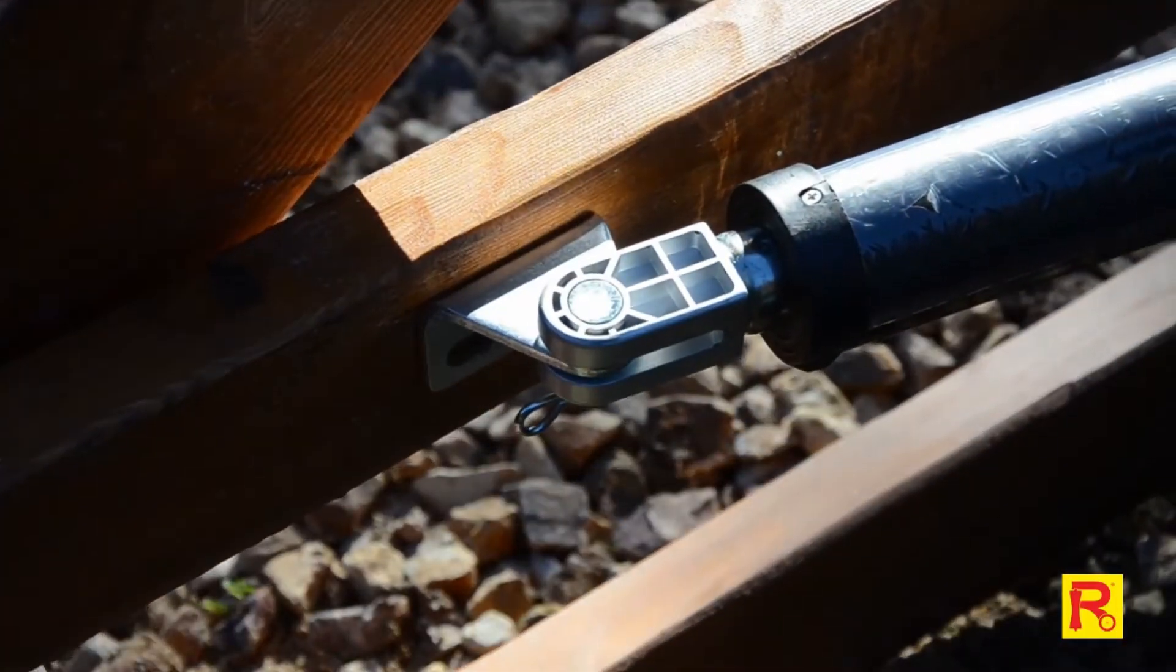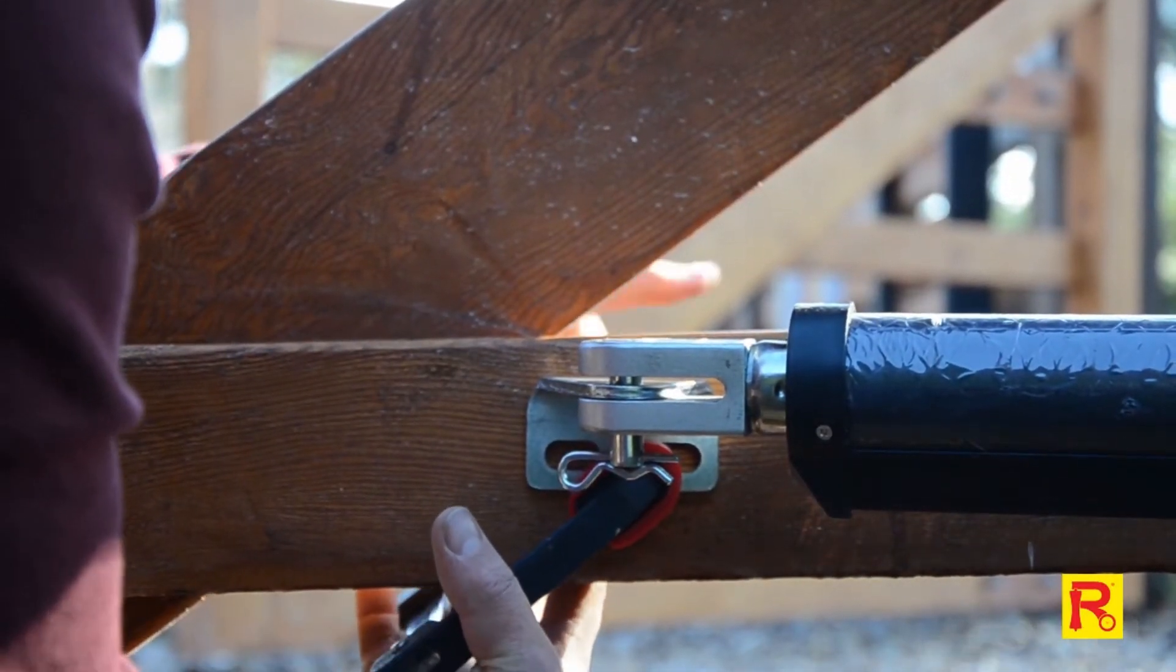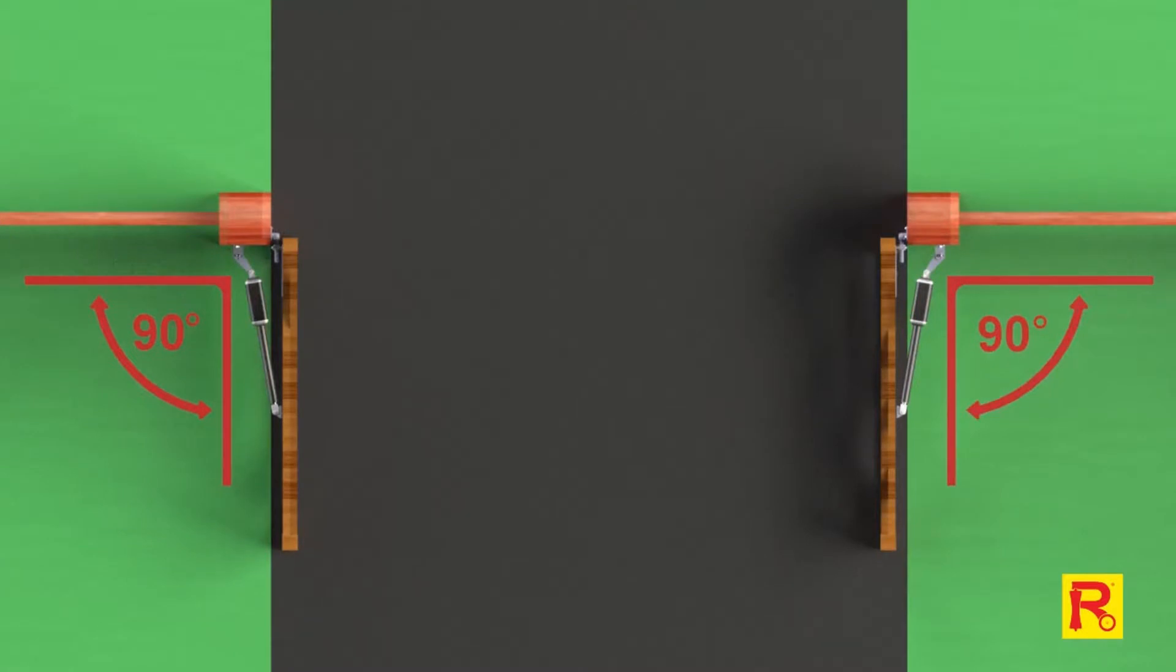Now, clamp the gate bracket to your gate, ensuring the motor arm is retracted and your gate is in the fully open position 90 degrees to your fence line. Repeat this process for the other gate opener arm.